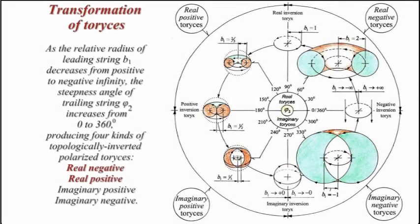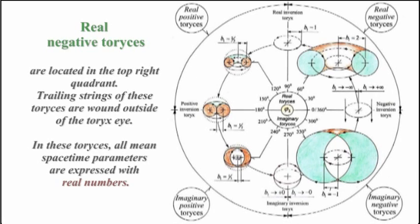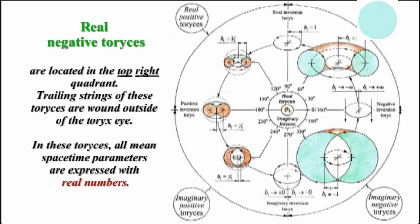As the relative radius of the leading string b1 decreases from positive to negative infinity, the steepness angle of the trailing string φ2 increases from 0 to 360 degrees, producing four kinds of topologically inverted polarized Toreases: real negative, real positive, imaginary positive, and imaginary negative. Real negative Toreases are located in the top right quadrant; their trailing strings are wound outside of the Torek's eye, and all mean spacetime parameters are expressed with real numbers.